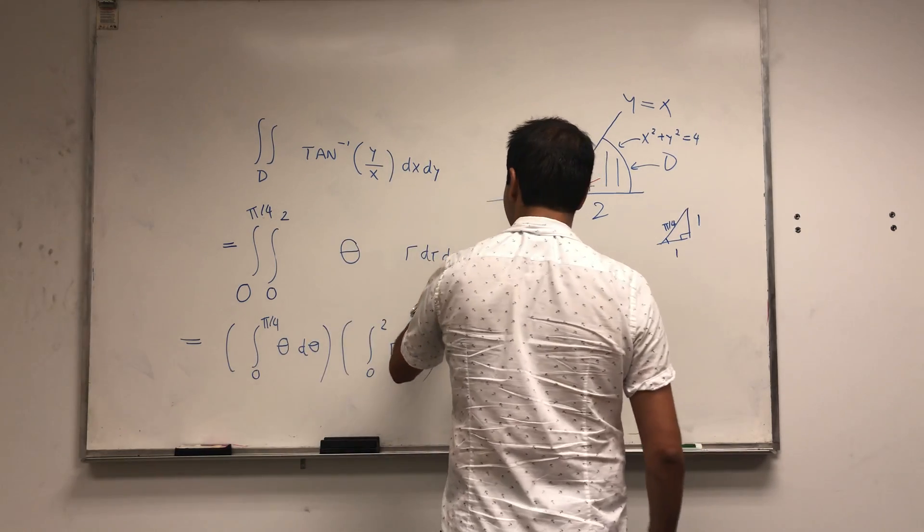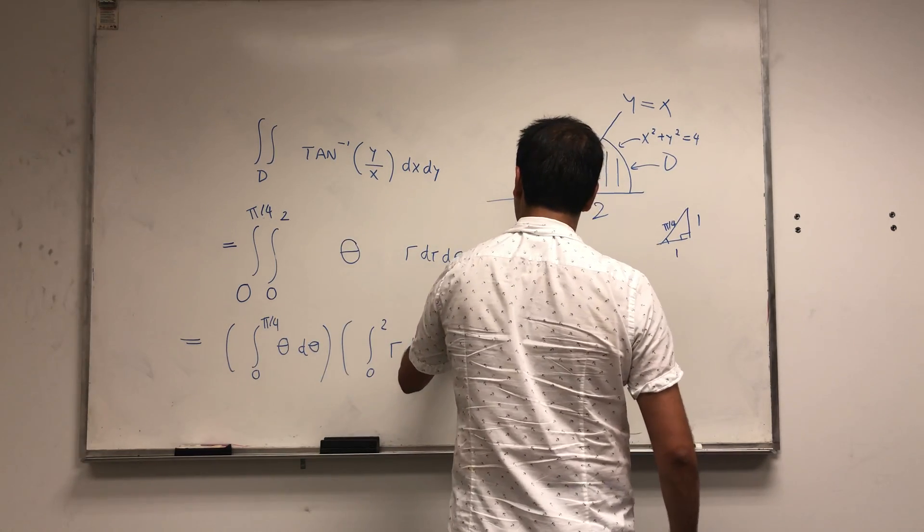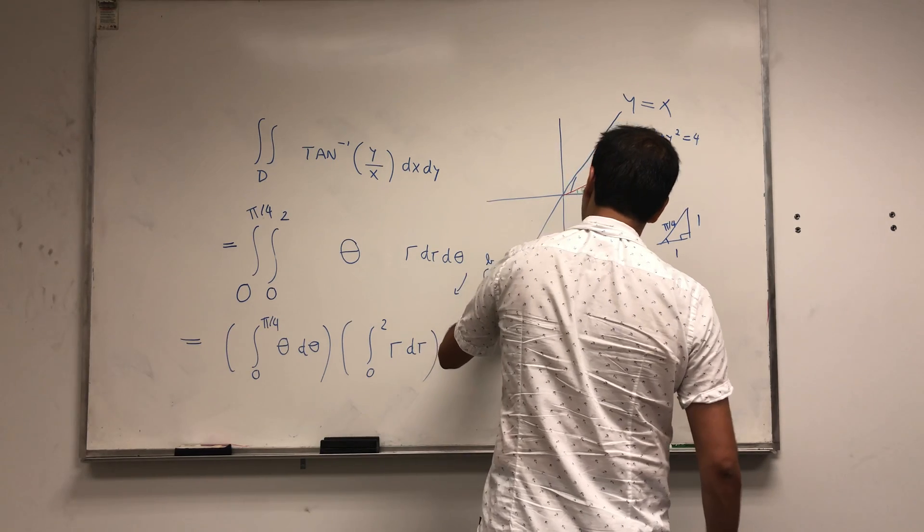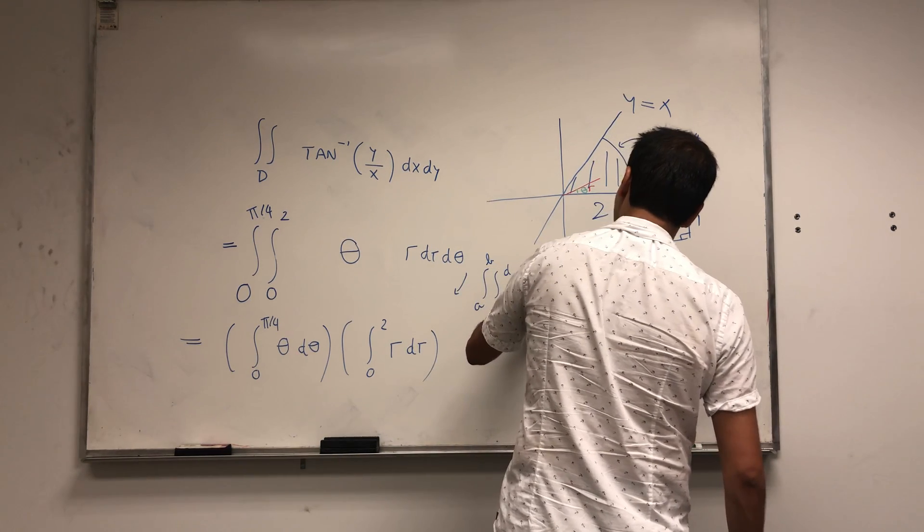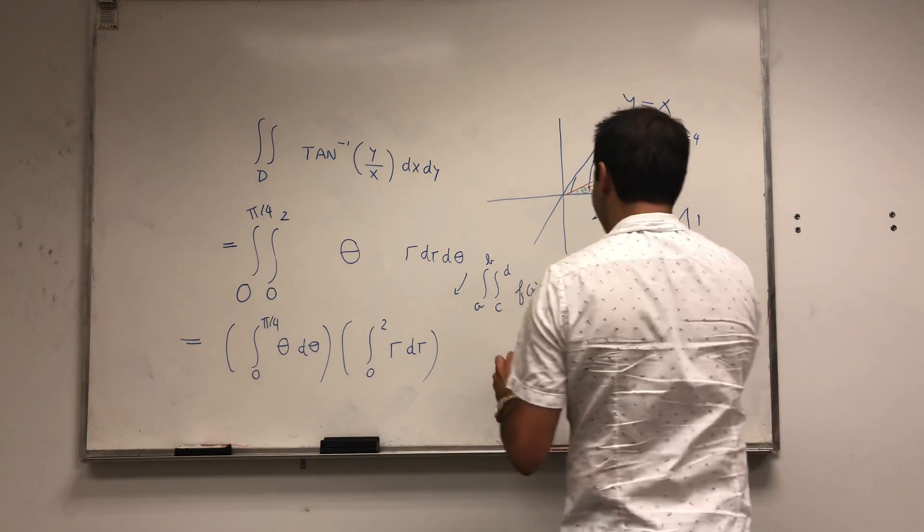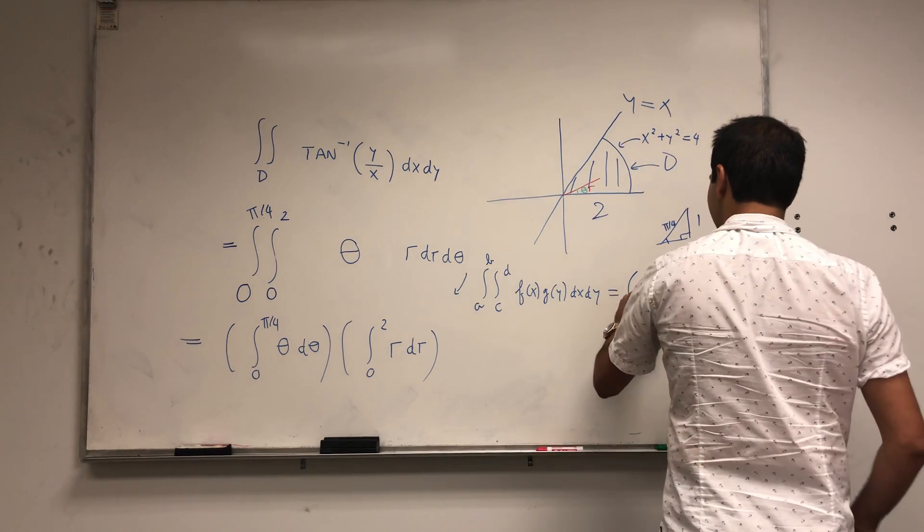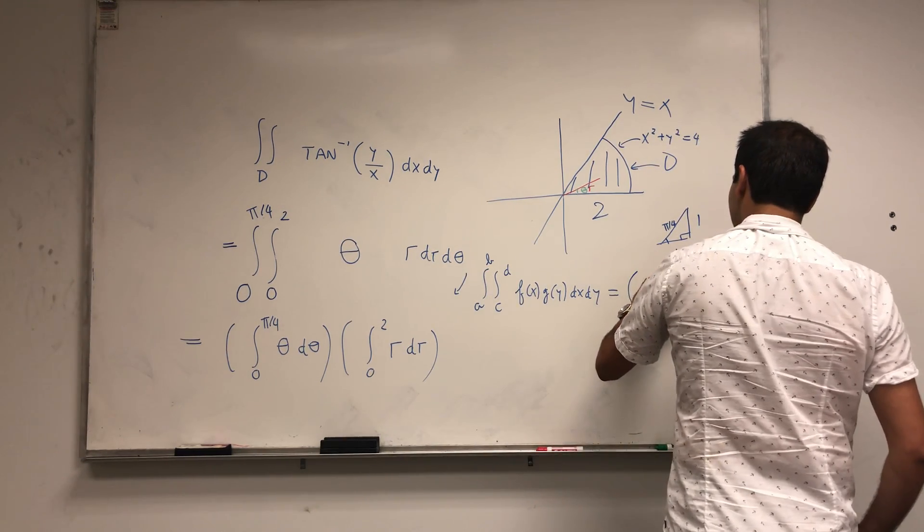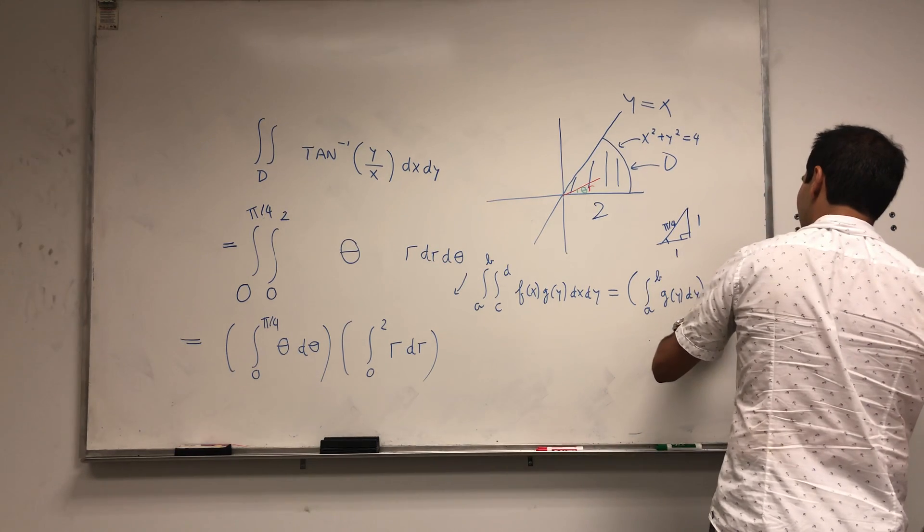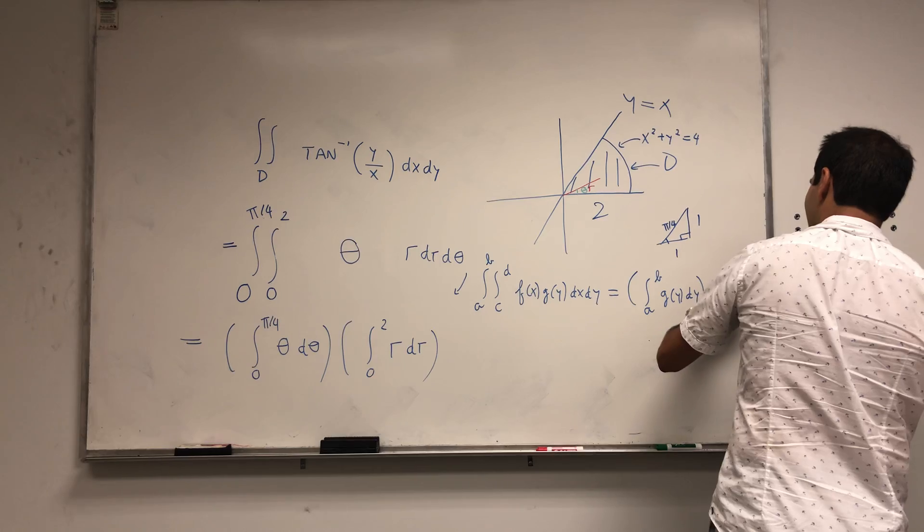Again, if you want, I just use the fact that the integral from a to b and c to d of f of x g of y dx dy, just make sure to respect the endpoints, it's the integral from a to b of g of y dy times the integral from c to d of f of x dx.